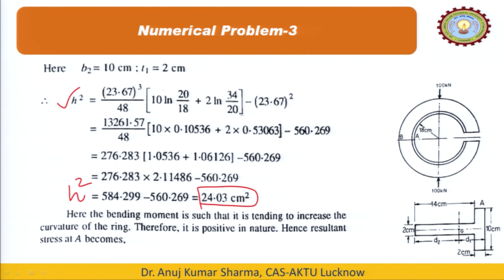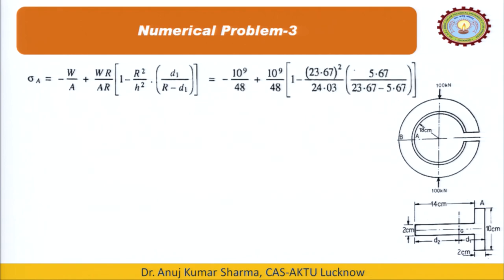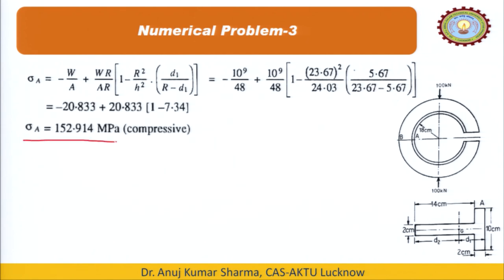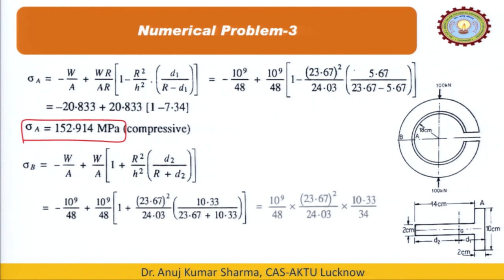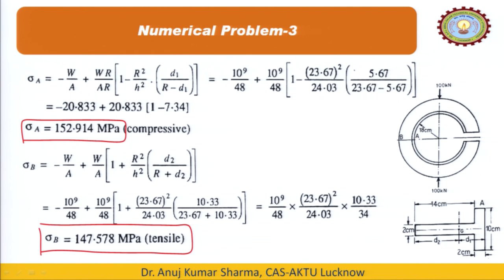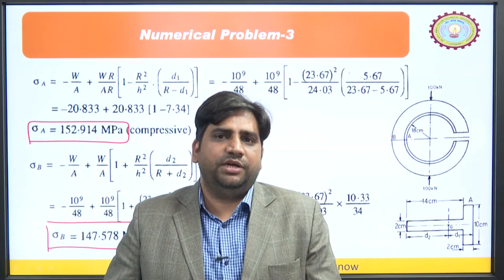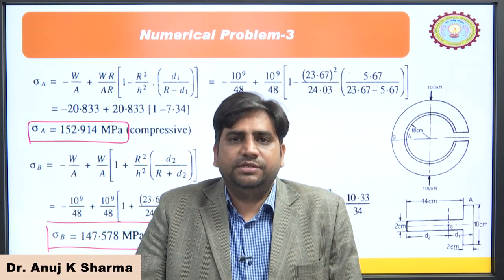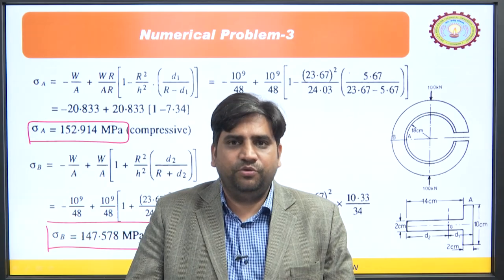Here the bending moment tends to increase the curvature of the ring, so it is positive in nature. Calculating direct stress as W/A and algebraically adding the stresses: σ_A is compressive in nature, and σ_B = 147.578 MPa tensile in nature. This concludes our discussion of stresses in the crane hook. I hope you have enjoyed this lecture. Please do practice at home. Thank you so much.